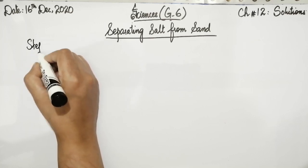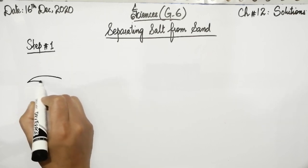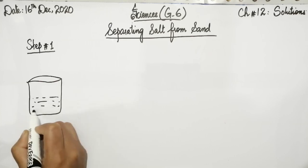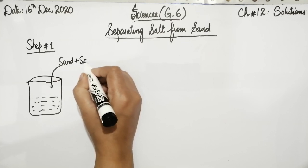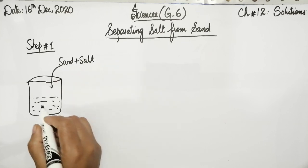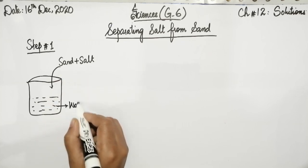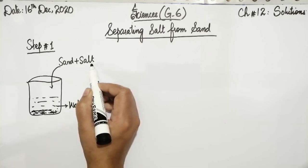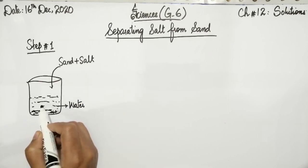We are going to proceed step by step starting from step number one. In step number one, first we take a beaker containing a small amount of water. Then we add sand and salt mixture in it. We stir both these things together in the water. We will find that sand will not dissolve, so it will settle down at the bottom of the beaker. While the salt, being a soluble substance, is completely dissolved in water and forms salt solution.